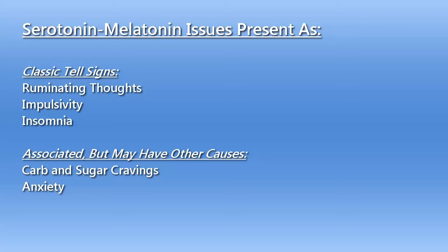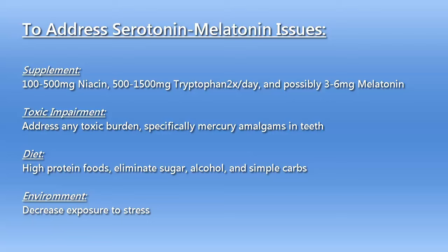Other associated things may include carb and sugar cravings and anxiety. To address serotonin and melatonin issues: supplement with 100 to 500 mg of niacin, 500 to 1,500 mg of tryptophan twice a day, and possibly 3 to 6 mg of melatonin at night. Address any toxic burden, specifically mercury amalgams in teeth. Diet: high protein foods; eliminate sugar, alcohol, and simple carbs. Environment: decrease exposure to stress.